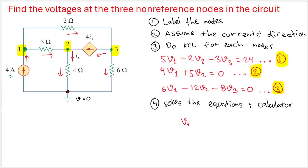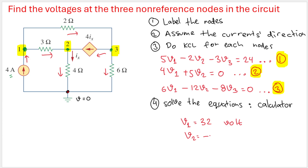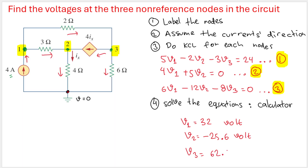The calculator gives us: V1 = 32 volts, V2 = -25.6 volts, and V3 = 62.4 volts. These are the node voltages asked for by the question. That's all for this problem — we solved it step by step carefully. See you in the next video!